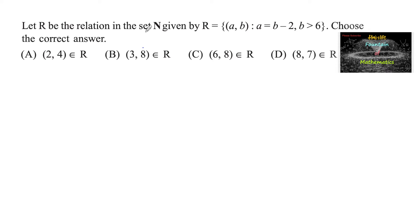Let R be the relation in the set N (natural numbers) given by R is equal to (a, b) such that a is equal to b minus 2, where b is greater than 6. Choose the correct answer.